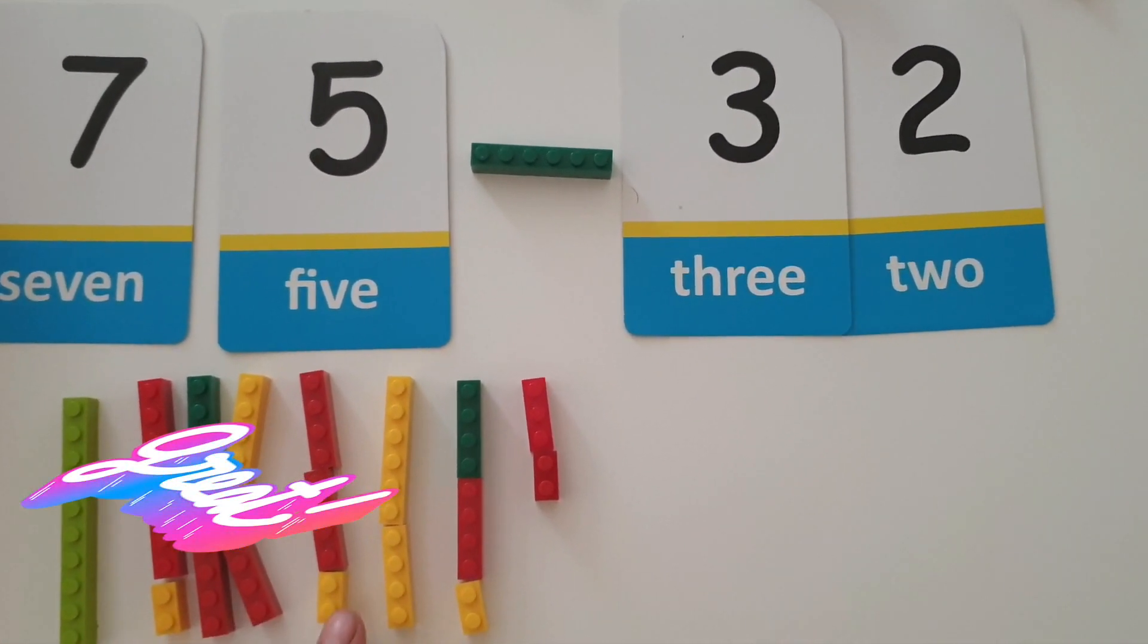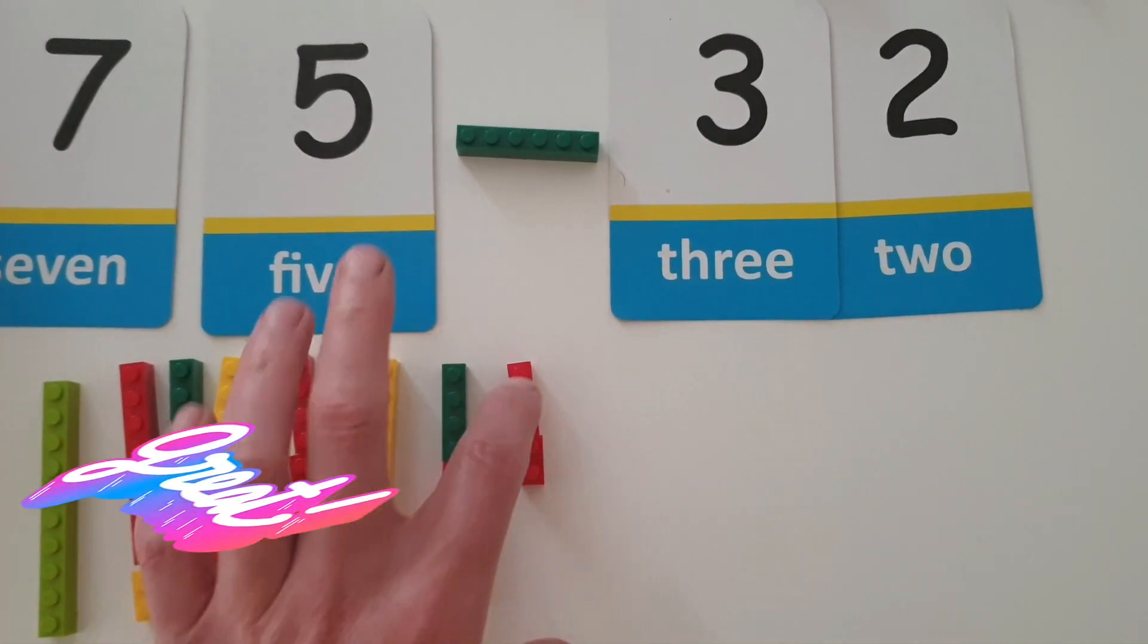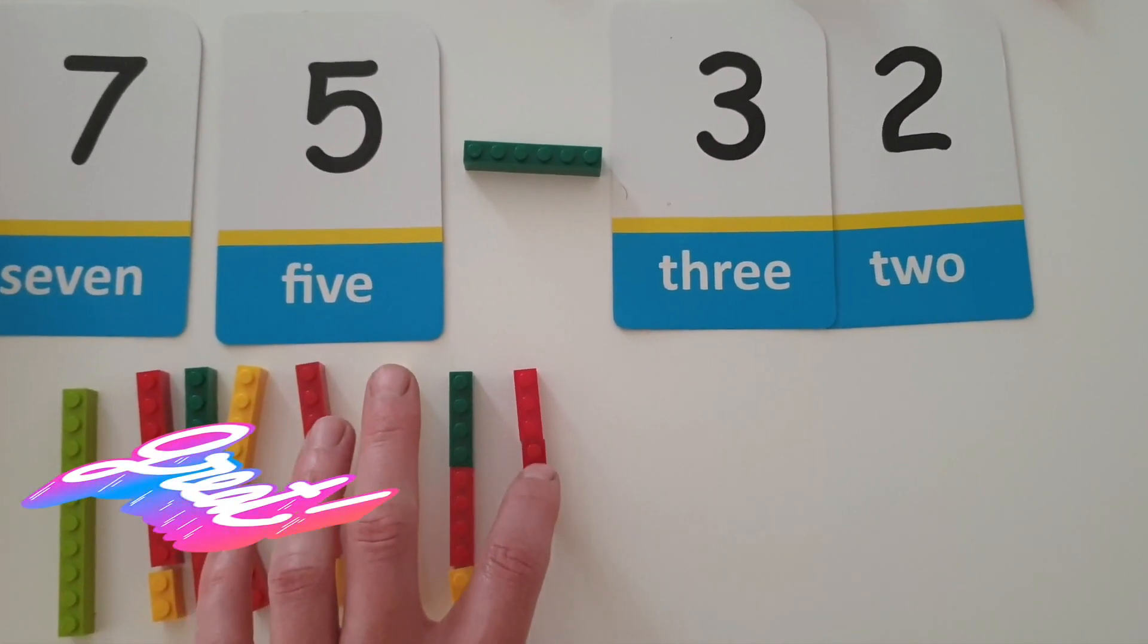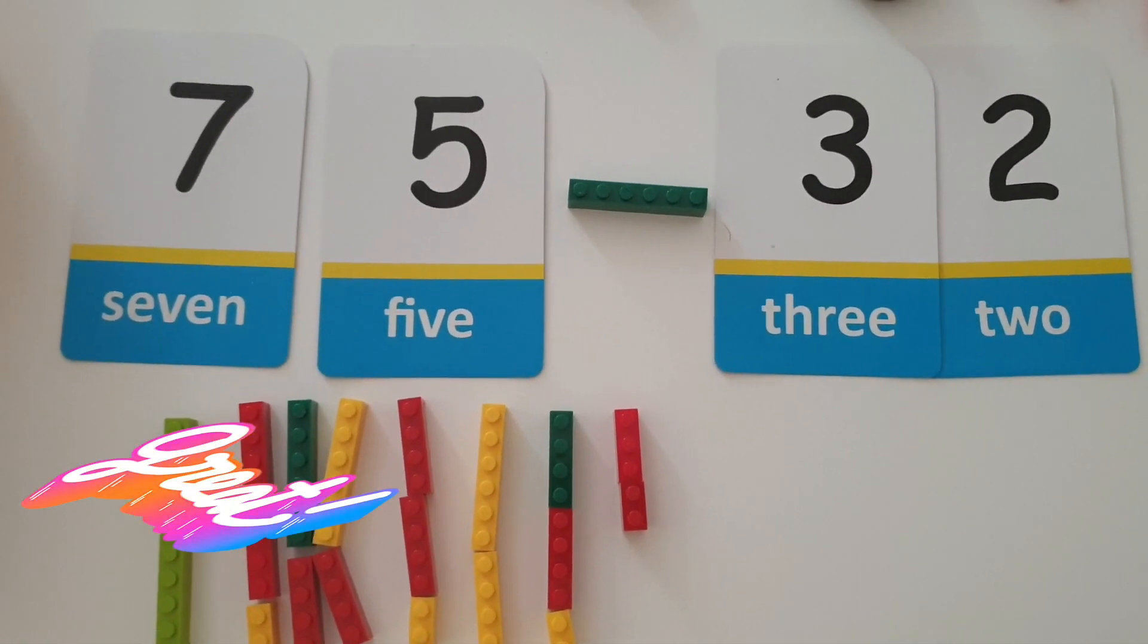Let's double check that. Ten, twenty, thirty, forty, fifty, sixty, seventy, one, two, three, four, five. Now what I need to do is subtract my 32.